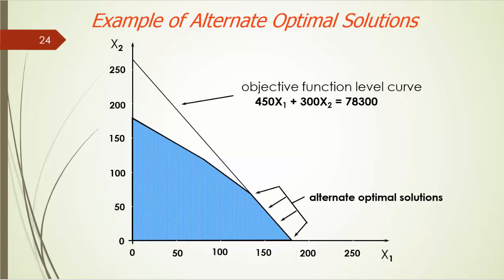Alternatively, if we go with the corner approach, we can easily find that the two corners, 122.78 and 174.0, both yield the highest profit of $78,300. So, everything in between will do the same. This is the situation we call alternate or multiple optimal solutions.